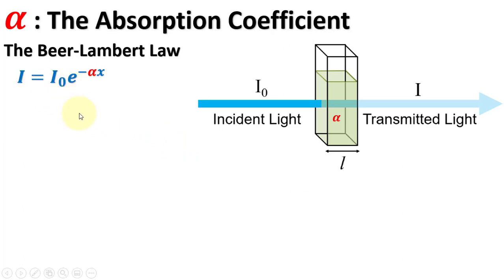We can rearrange the equation and put x equals L, which is the thickness of the solution through which the intensity is passing. Here it is the standard length of a cuvette.